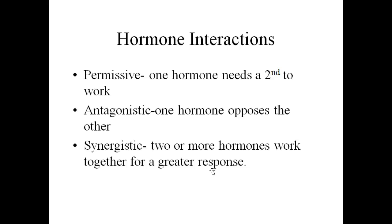Before getting to the hormones of the pituitary gland, let's talk about how hormones interact with each other — there are three ways. In some cases you need the permission of one hormone before the other can start working, like milk production: one hormone produces milk, but another is responsible for injecting the milk into the duct. Antagonistic hormones go against each other — for example, insulin and glucagon both regulate blood sugar, one raising it and one lowering it. And then you have synergistic hormones — they work together.